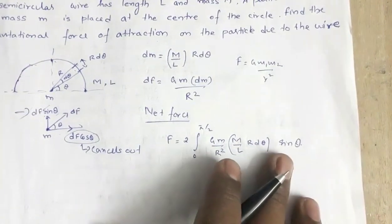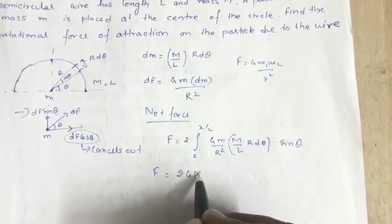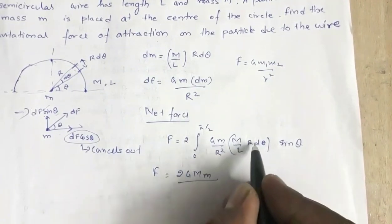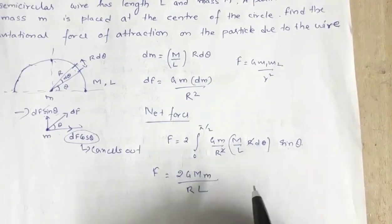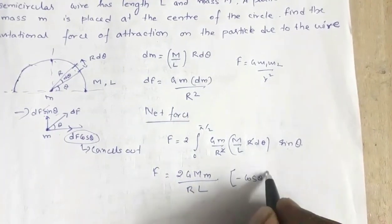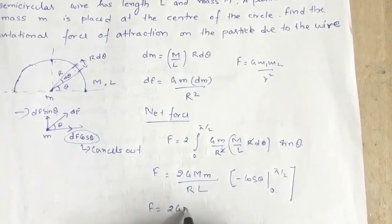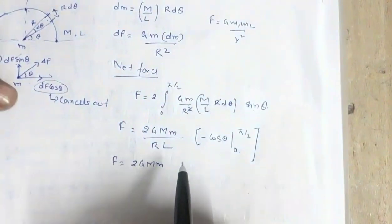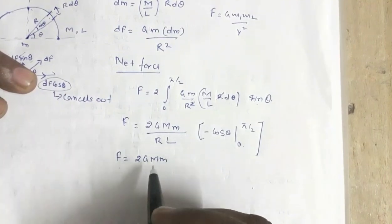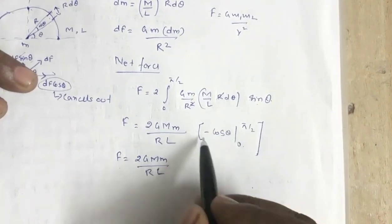All the terms are constant except sin θ, so we take out the constants: F = (2GMm)/(R·L) × ∫₀^(π/2) sin θ dθ. That integral equals [−cos θ]₀^(π/2) = −cos(π/2) + cos(0) = 0 + 1 = 1. So F = 2GMm / (R·L).